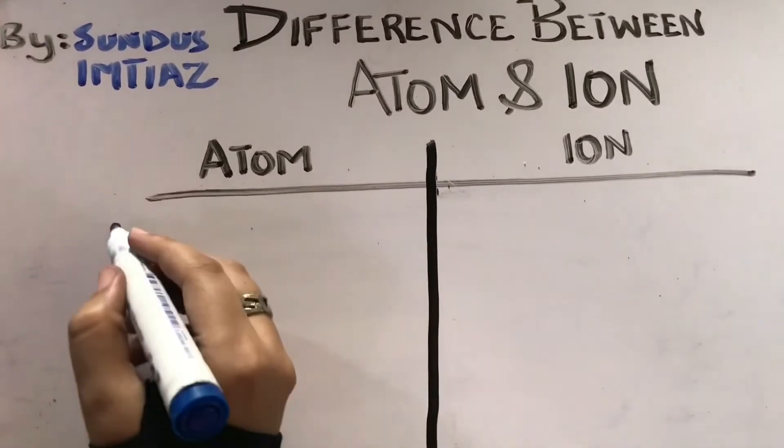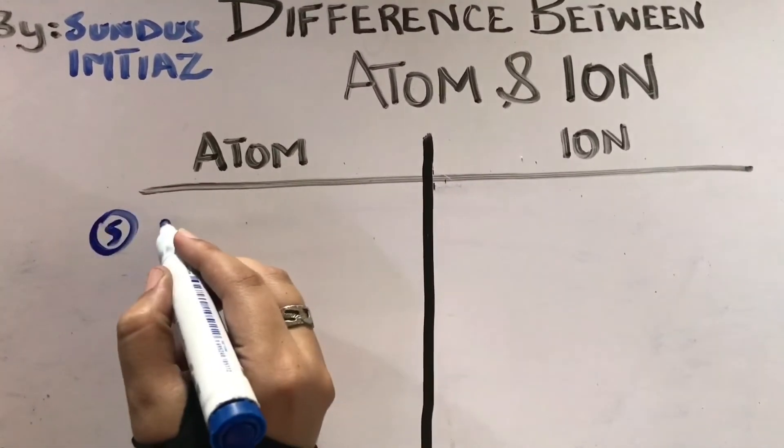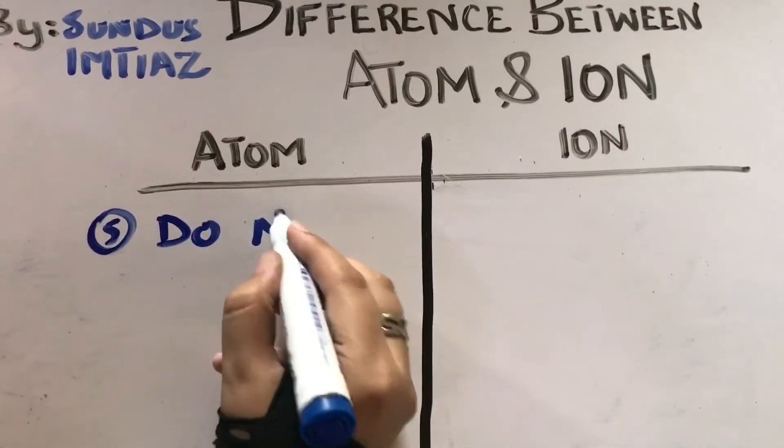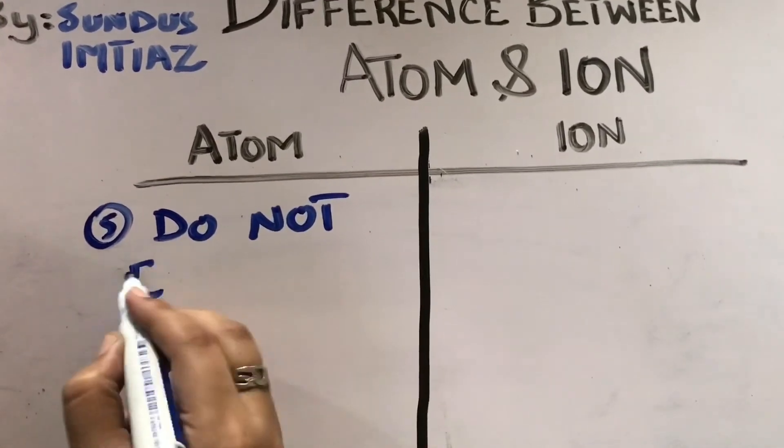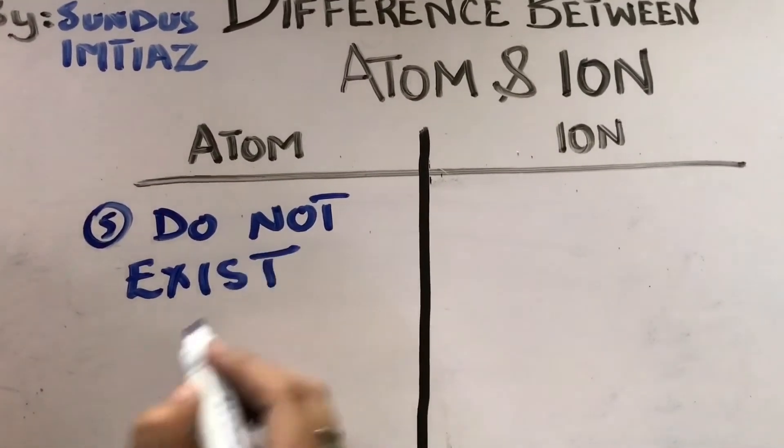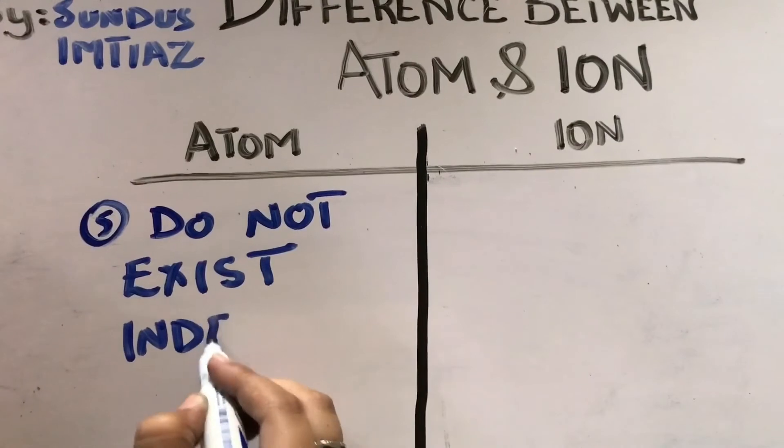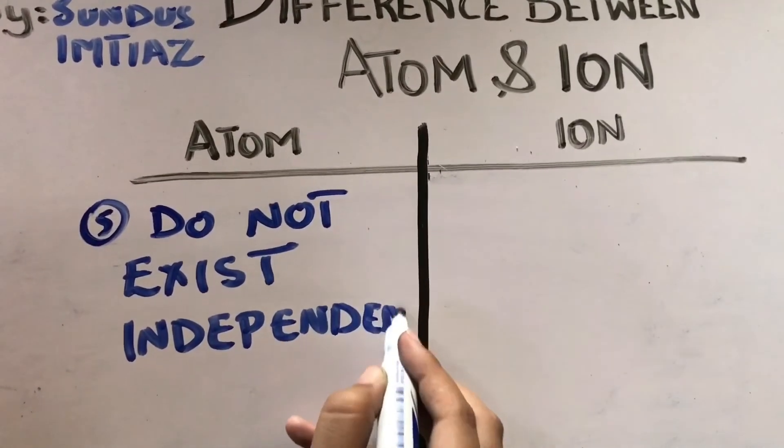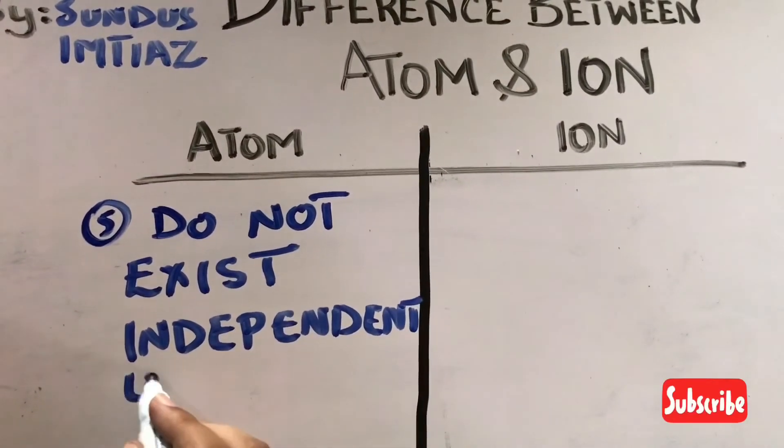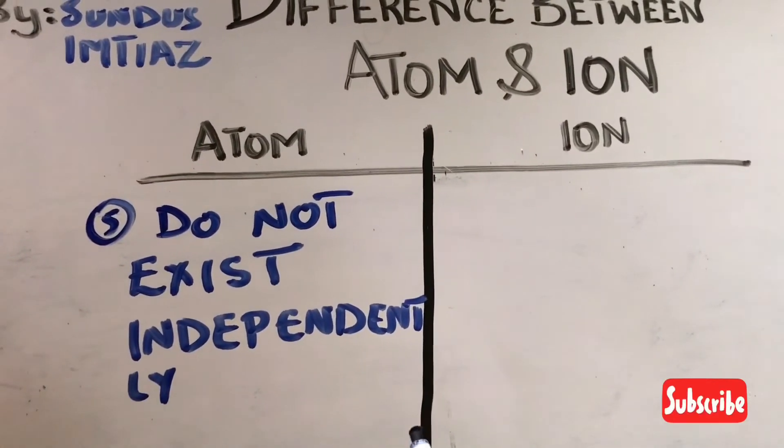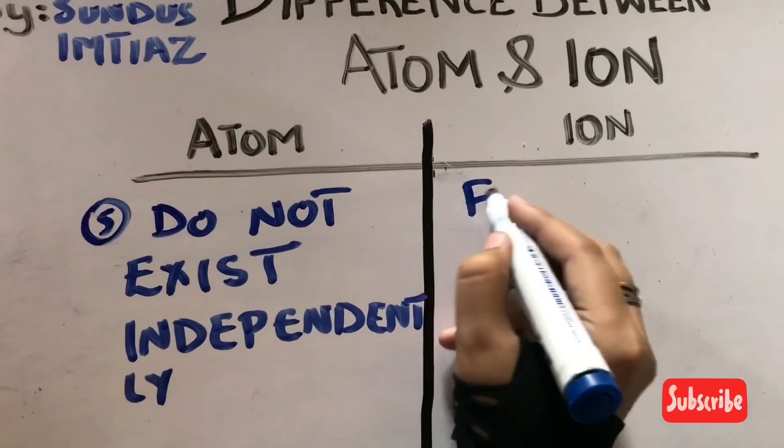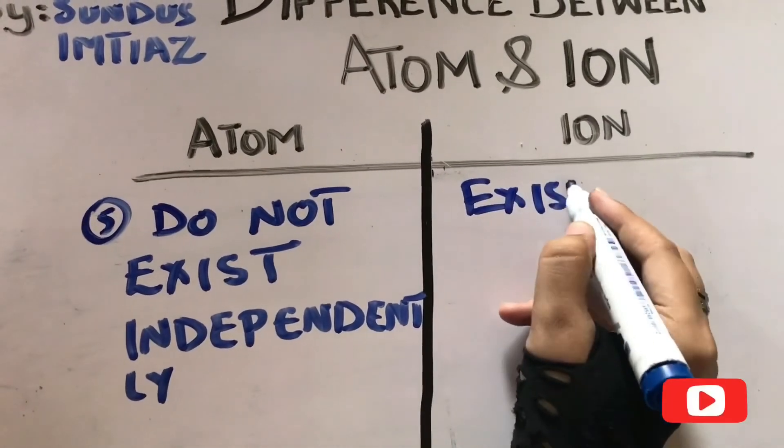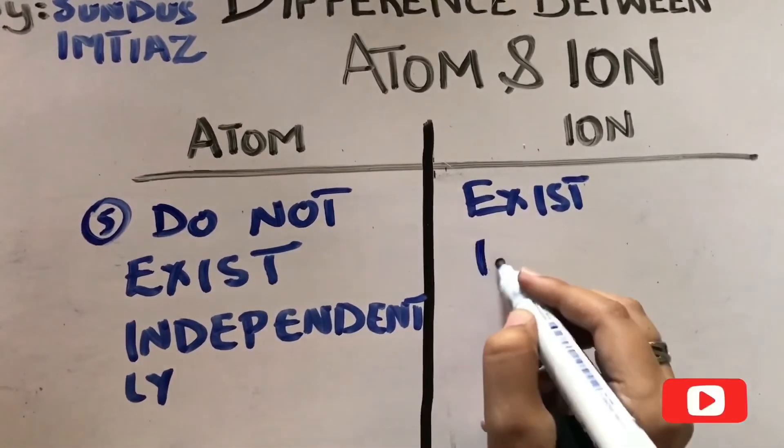And the fifth point is this, that the atoms do not exist independently. And the ions exist. They have the power to exist independently.